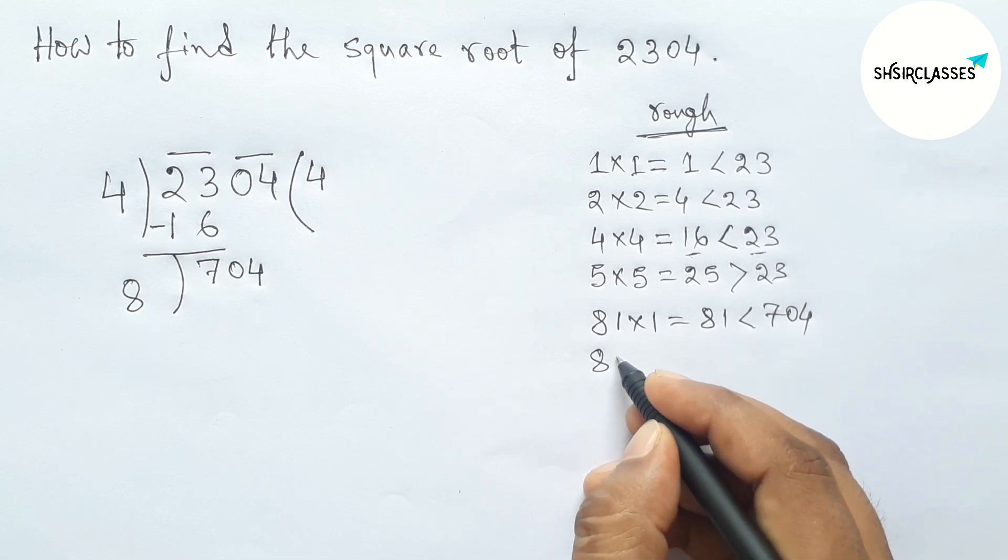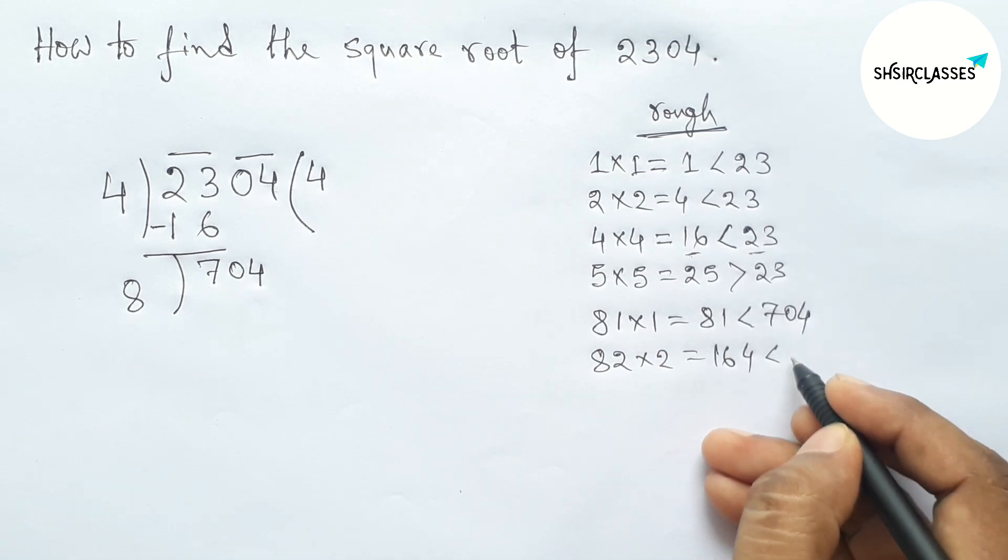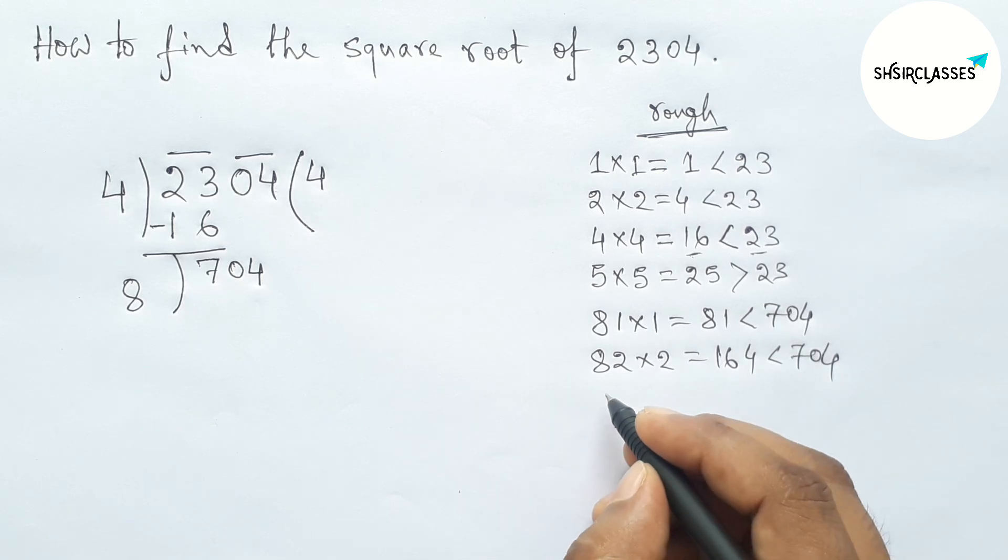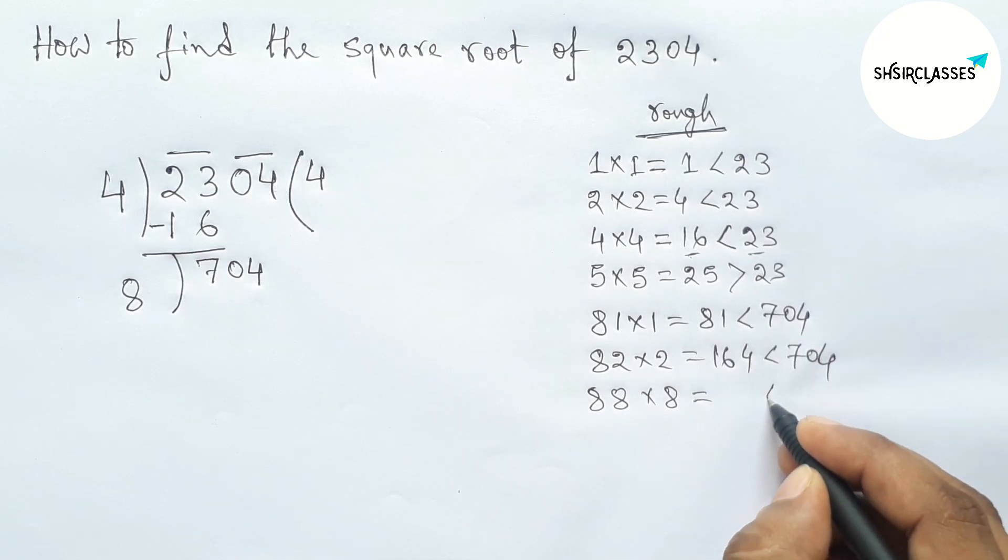So first taking 1 and multiplying by 1, which is less than 704. Now taking 2, so this is also less than 704. Next, directly taking here number 8, so putting here 8 and multiplying by 8.